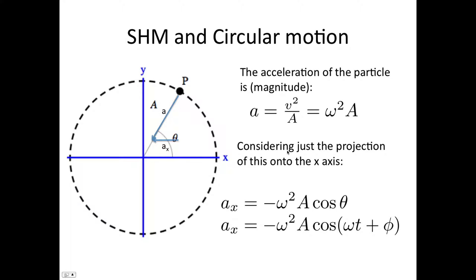Let's finally consider the acceleration. As you all know, acceleration is directed towards the center of the circle for circular motion. So the acceleration is given by v squared on r. r is A, which is omega squared A, substituting in v equals omega A.